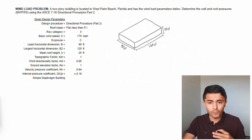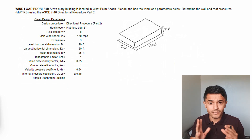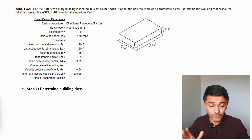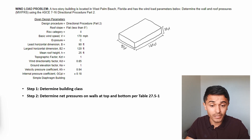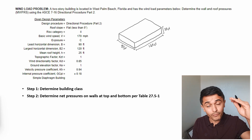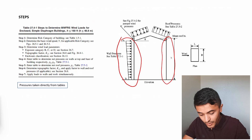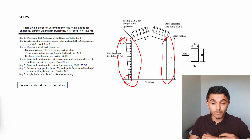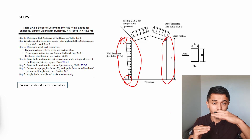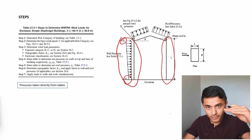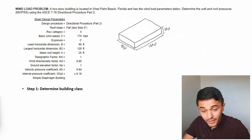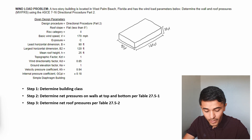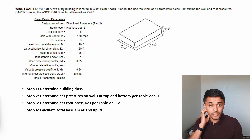This is our problem statement — the same building as in the previous two examples. Step one is to determine the building class. After that, we determine the net pressures on walls at the top of the wall (p_h) and at the bottom of the wall (p_0). In our case we don't have a sloped roof, so the top is at 25 feet. Then we determine the net roof pressures per the referenced table, and finally calculate the total base shear and uplift.